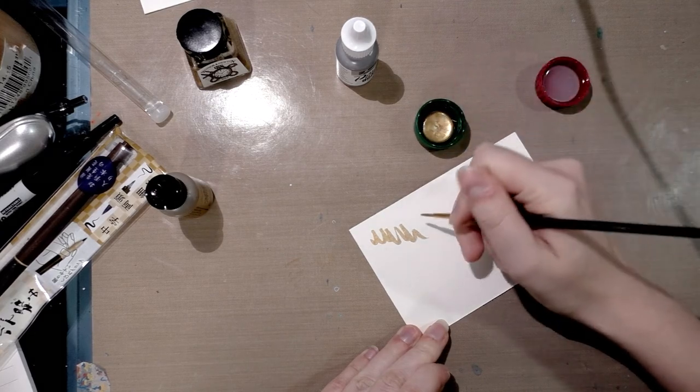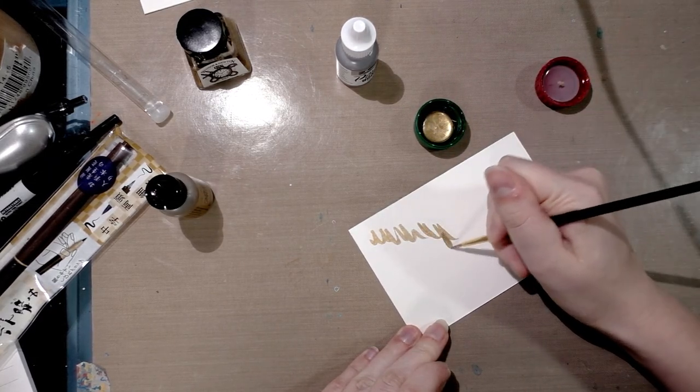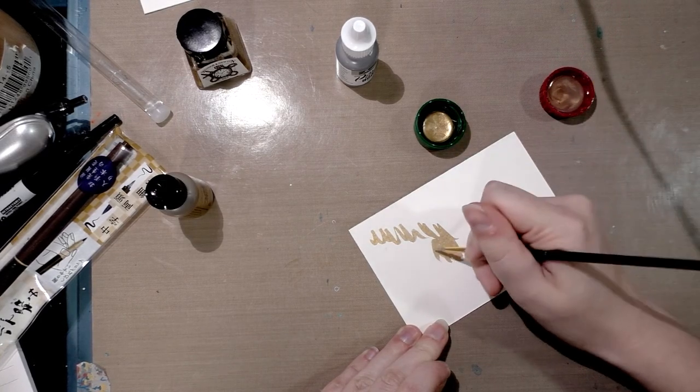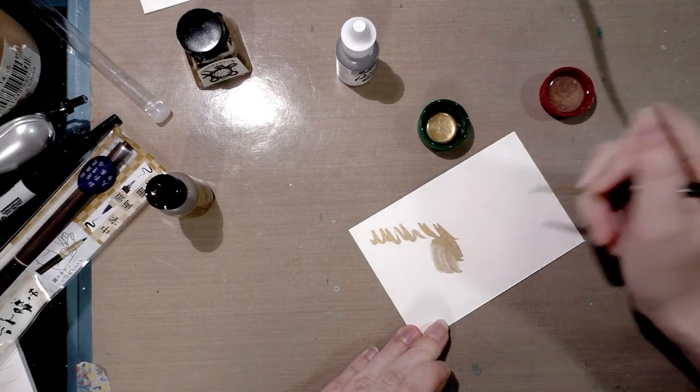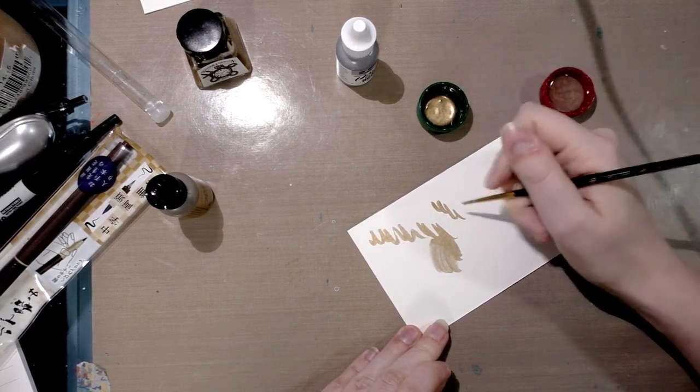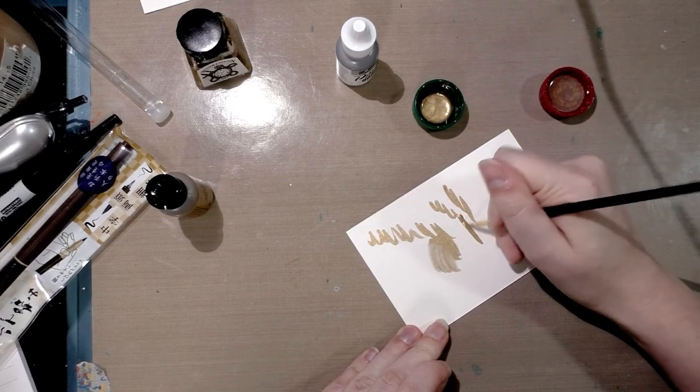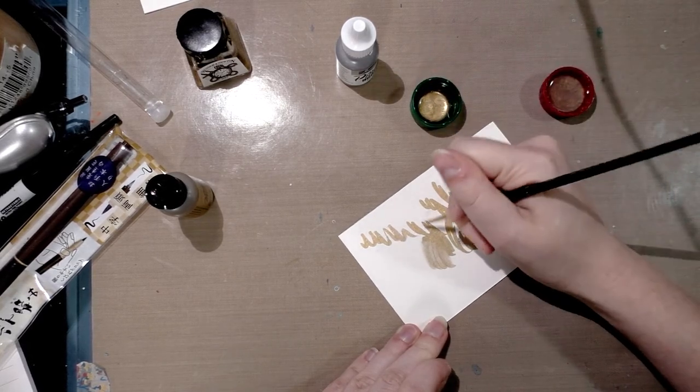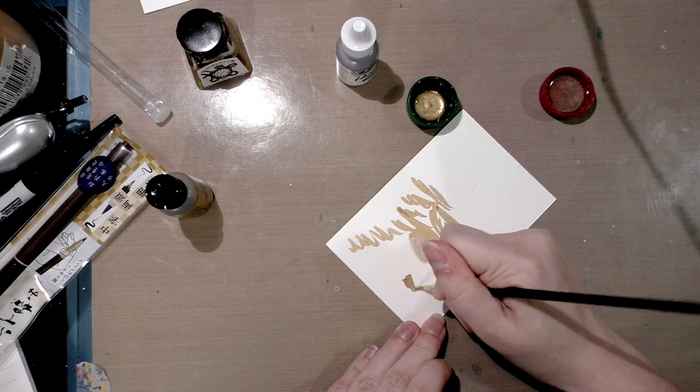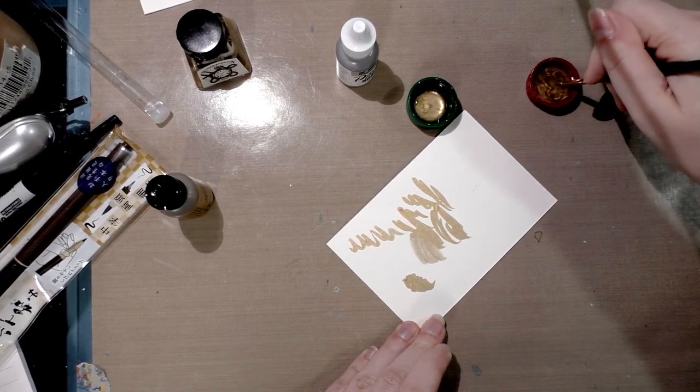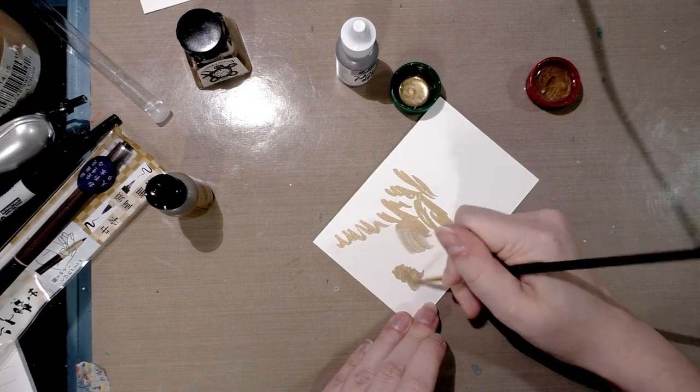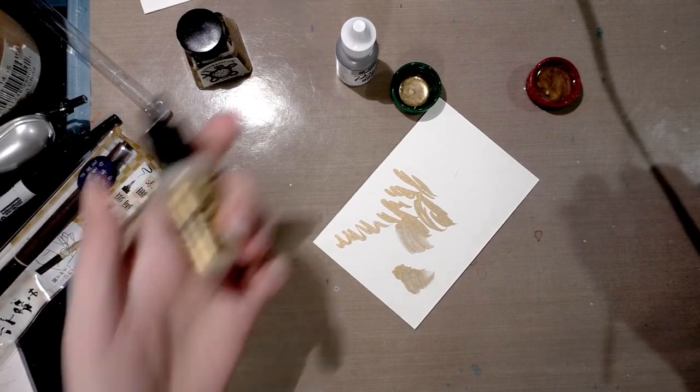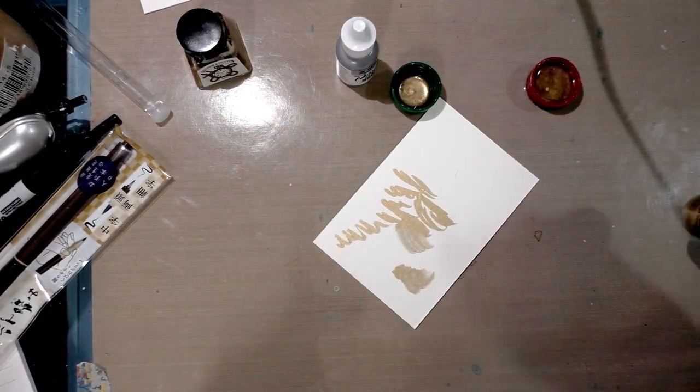All right, so this seems to be a way to apply these metallic or pearlescent alcohol based inks. You can thin them out using rubbing alcohol. You could also use blending solution either Copics or Rangers if you want but rubbing alcohol is cheap. And it seems to work just fine. So that's exciting at least we know that Rangers gold will work with this method of blending.